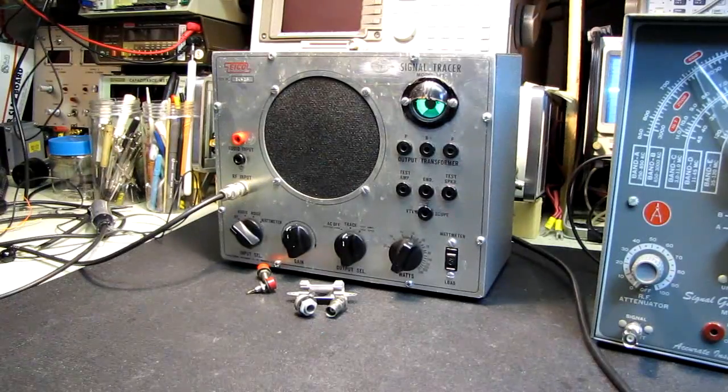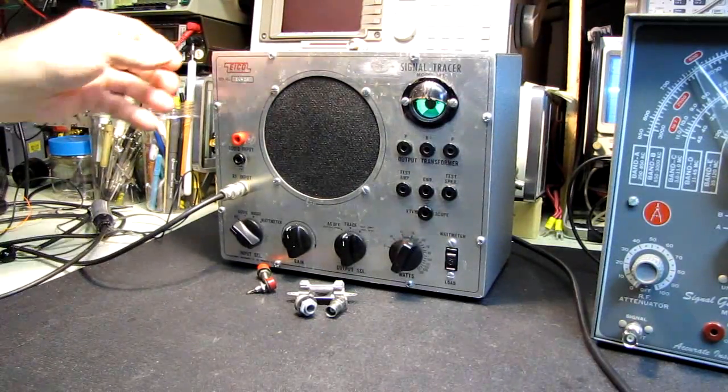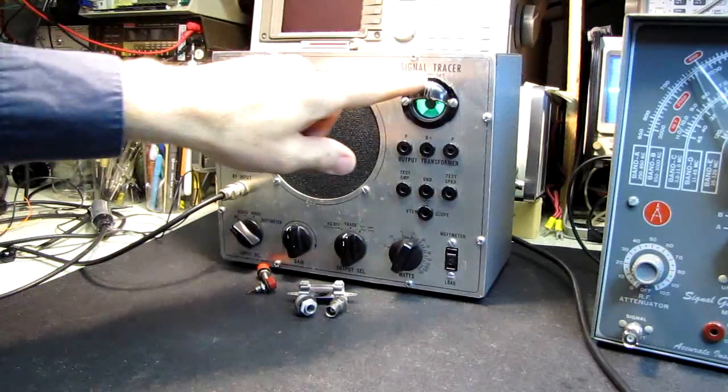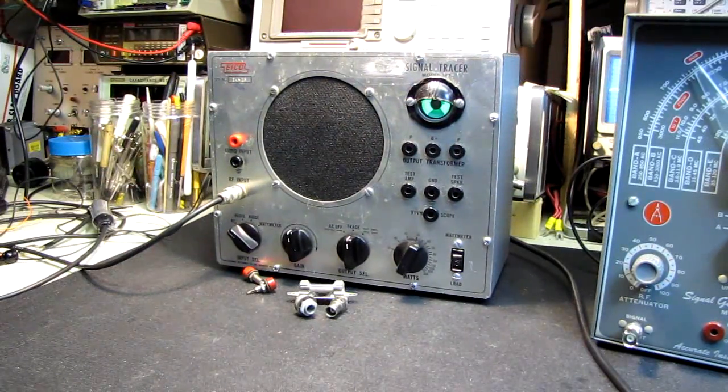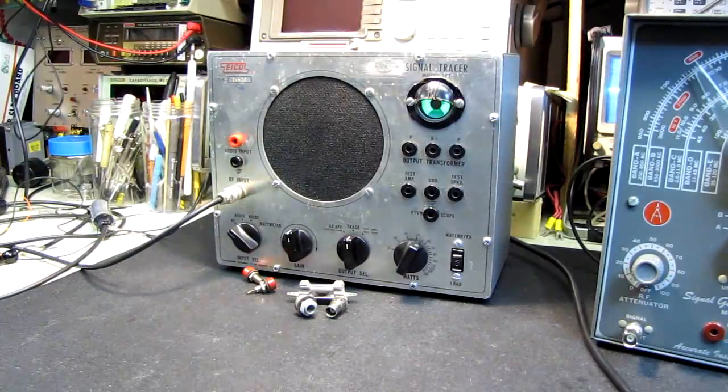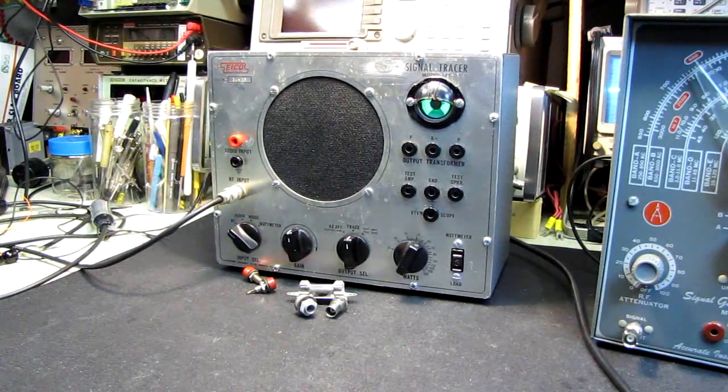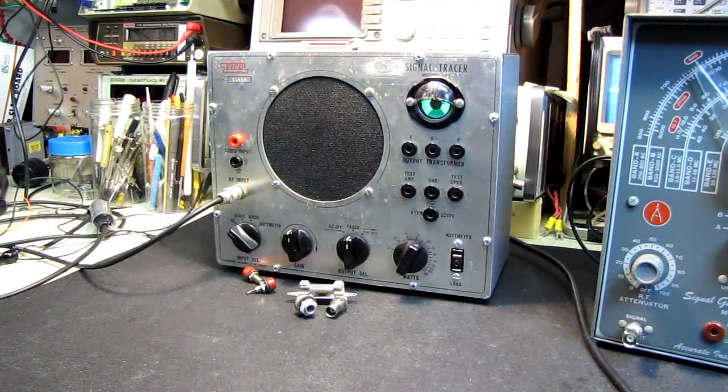Hello and welcome to a short edition of 10 Buck Test Bench. We're going to take a quick look at a model 147 ICO signal tracer that I picked up for the test bench videos and some improvements that I made.